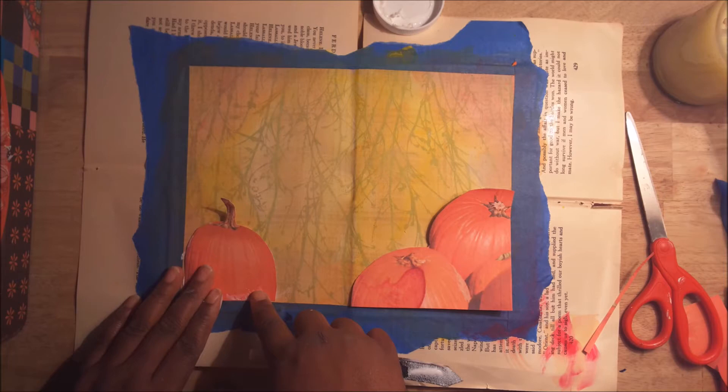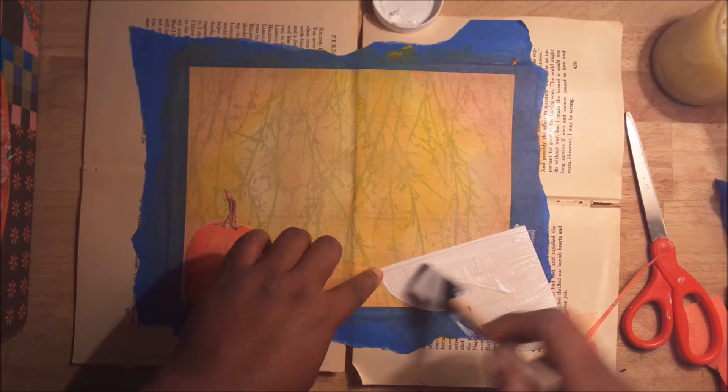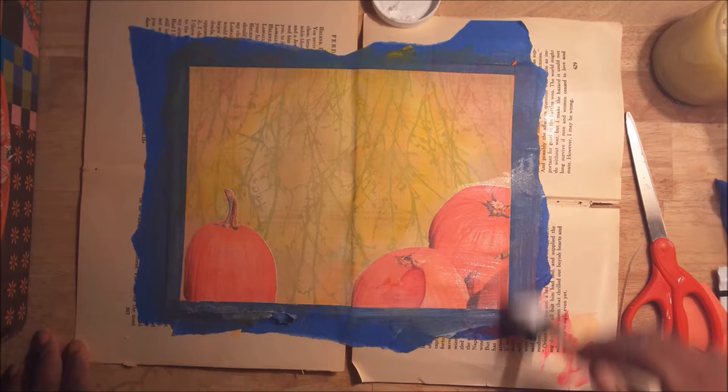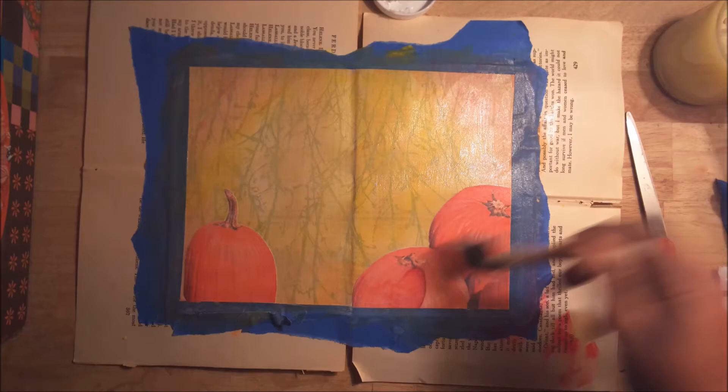Now I'm using the glossy sealer, but if you don't want your page to be shiny, you can use the matte. I personally like the glossy look. But matte can be really beneficial if you're not done adding things, like maybe writing or you want to write on the page. The glossy one doesn't really allow for that.